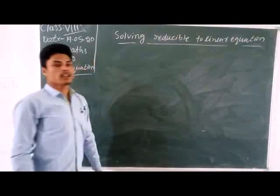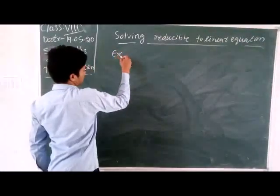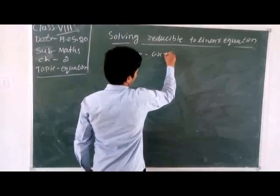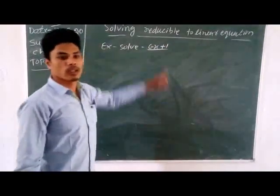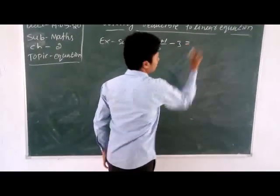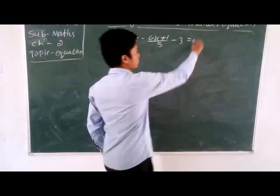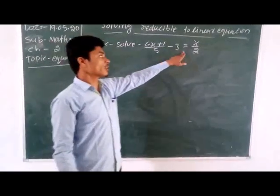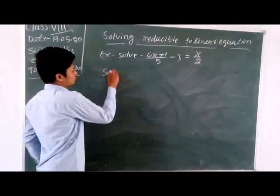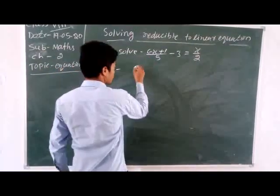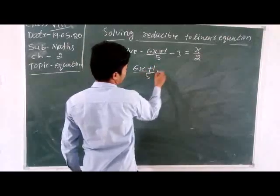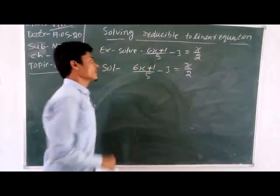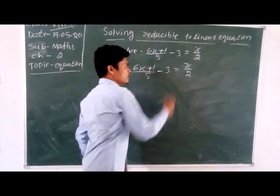Solving equations reducible to linear equations. Let's take a look. The question is: (6x + 1)/5 minus 3 equals x/2. We can multiply each side by 10.